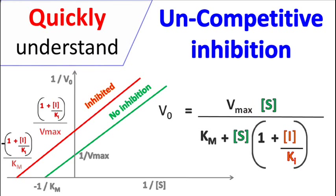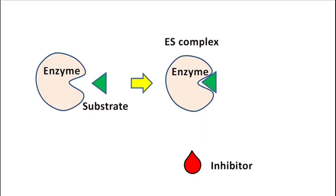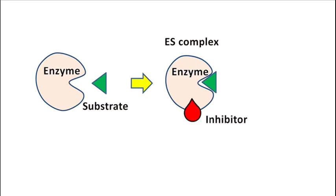Hey guys, Quick Biochemistry Basics here. Let's talk about uncompetitive inhibition. Uncompetitive inhibition is a phenomenon in which the inhibitor binds the ES complex.